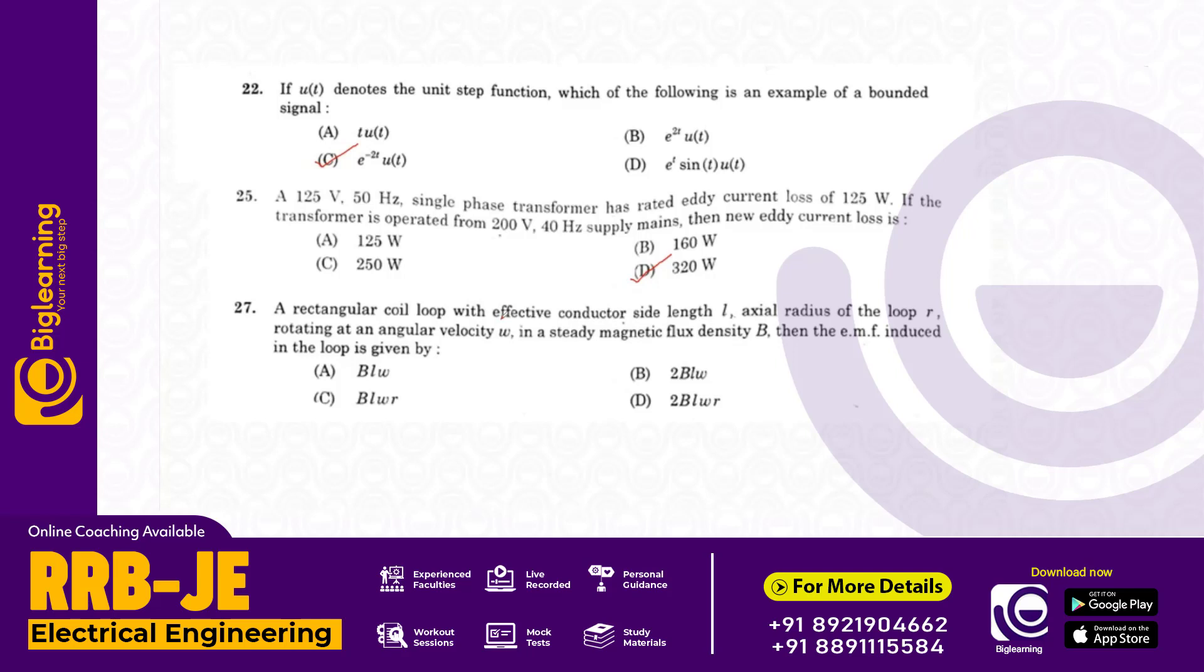A circular coil loop with effective conductor side length L, axial radius R, rotating at angular velocity omega W in a steady magnetic flux density B. The EMF induced in the loop is given by BL omega R. Answer C.